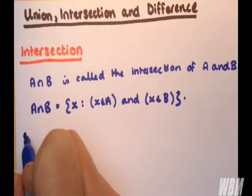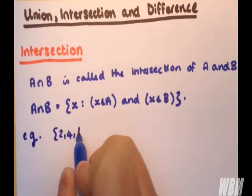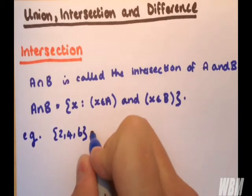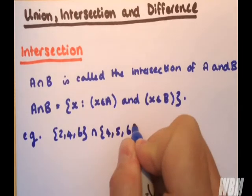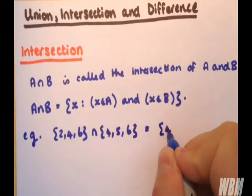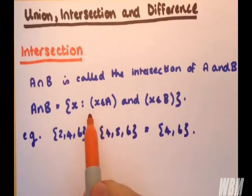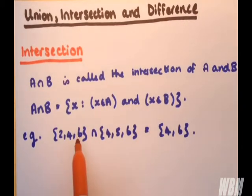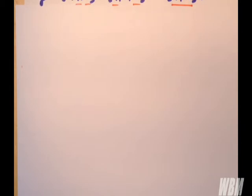A quick example. So say we have set 2, 4 and 6 as elements. And we want to see the intersect of this set with another set with elements 4, 5 and 6. The answer is the set 4, 6. Why is that? Well, what elements are in set A and set B? 4 and 6 occur here and here.